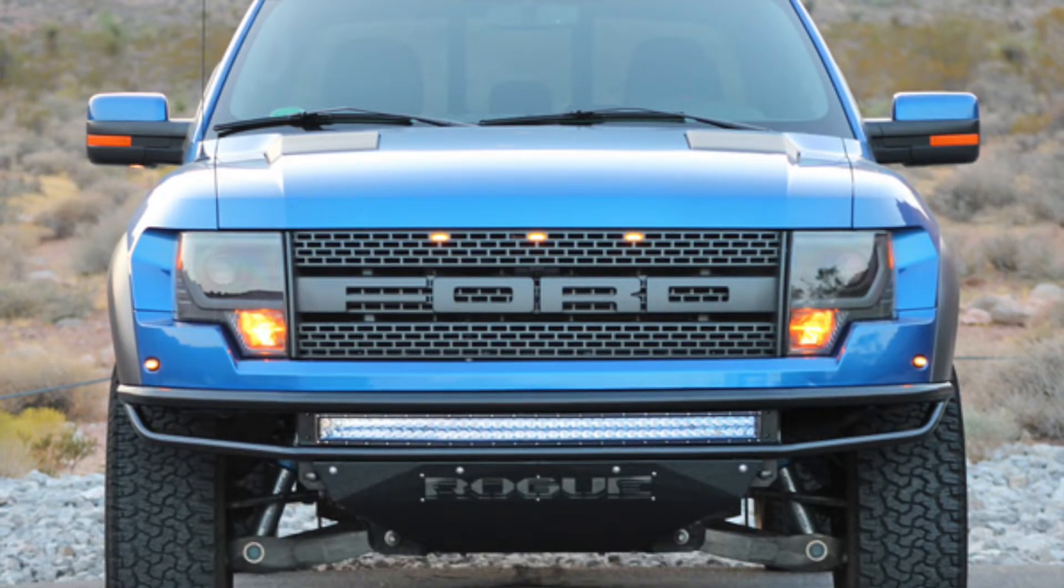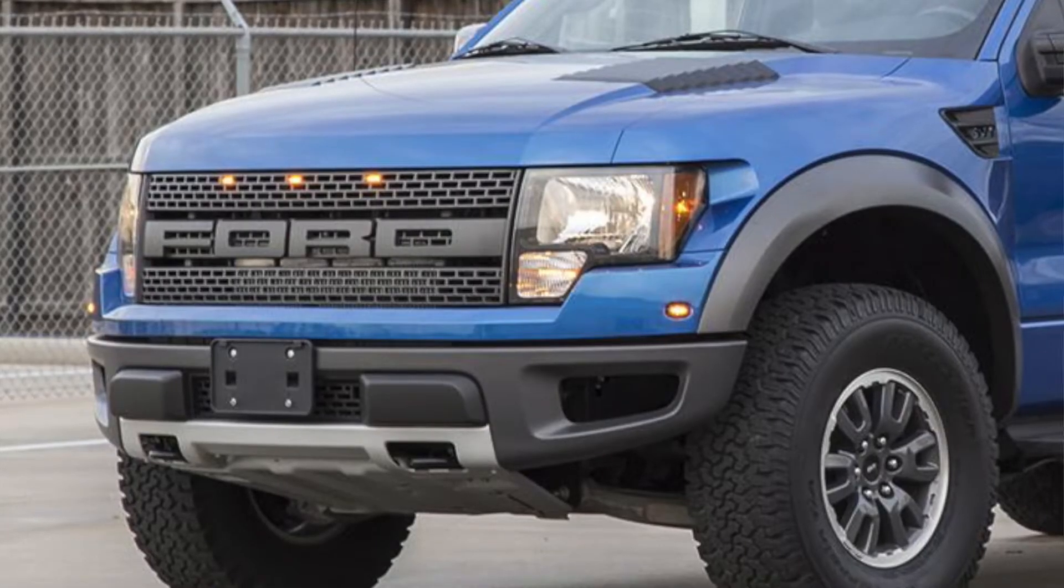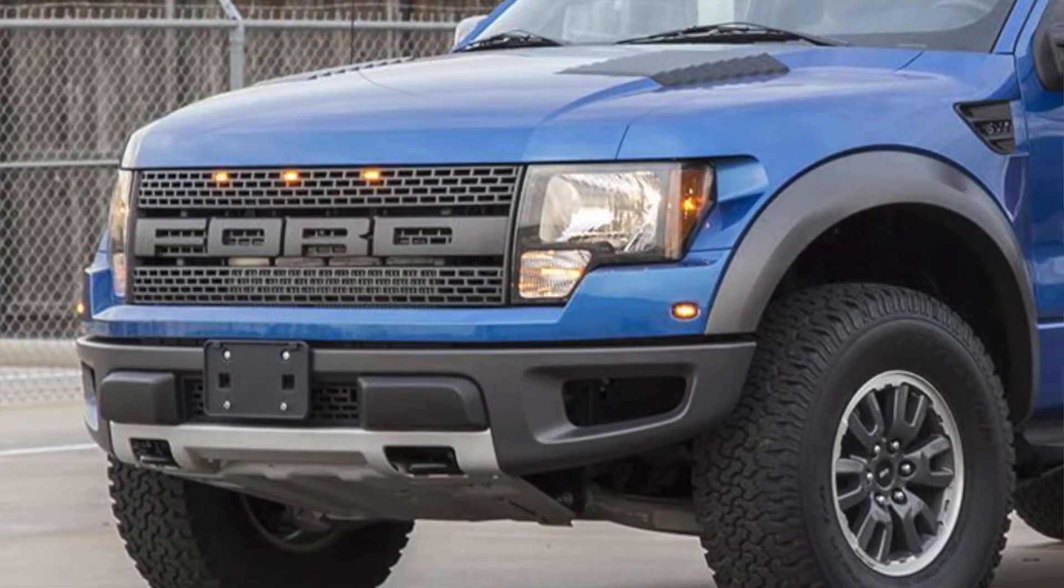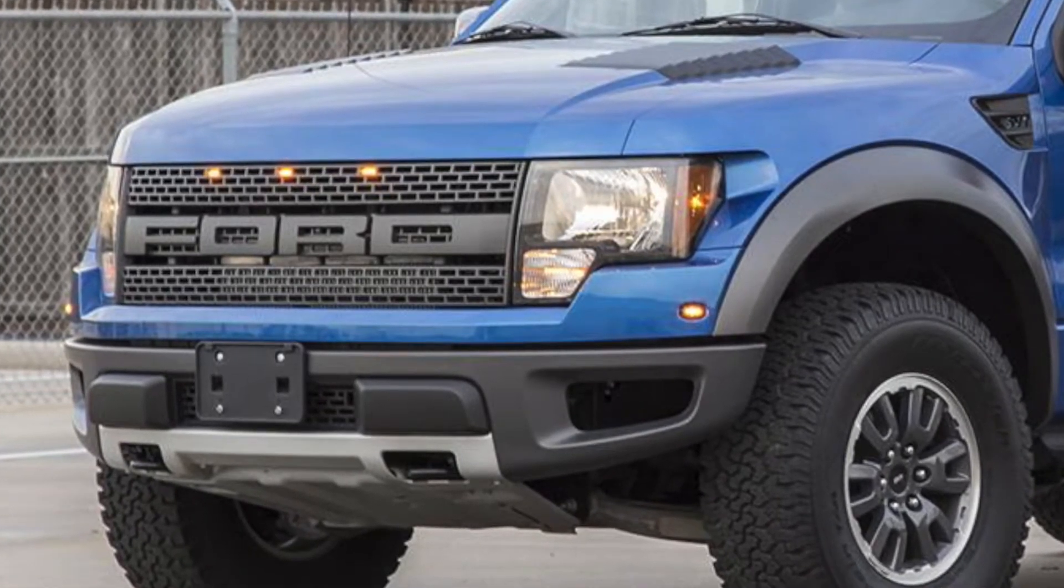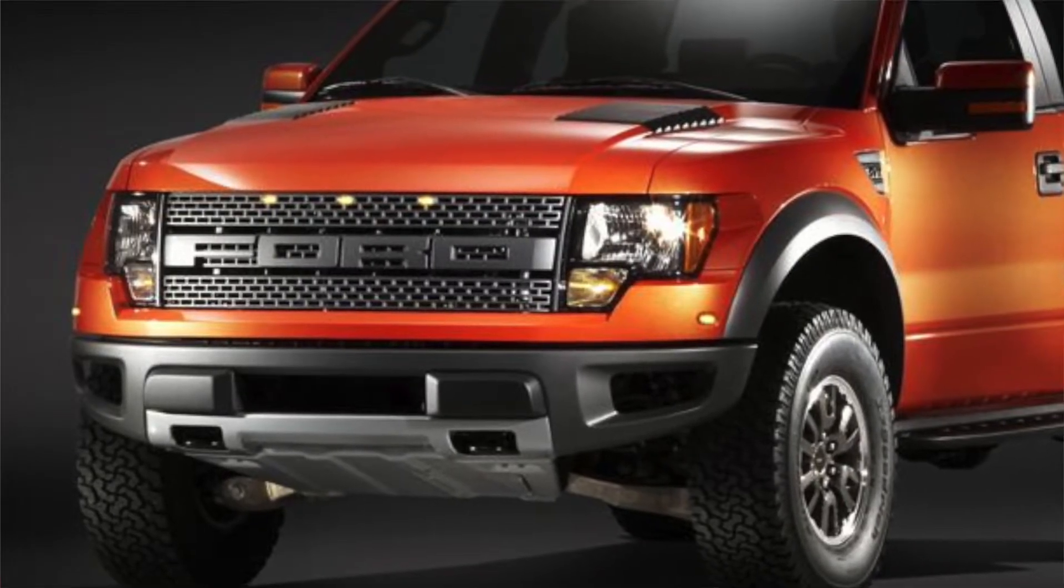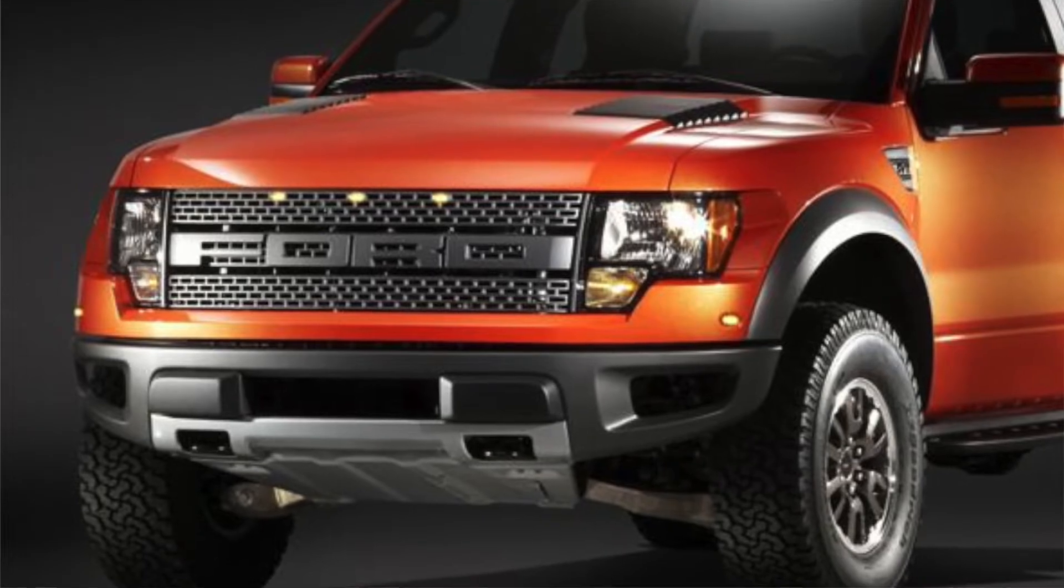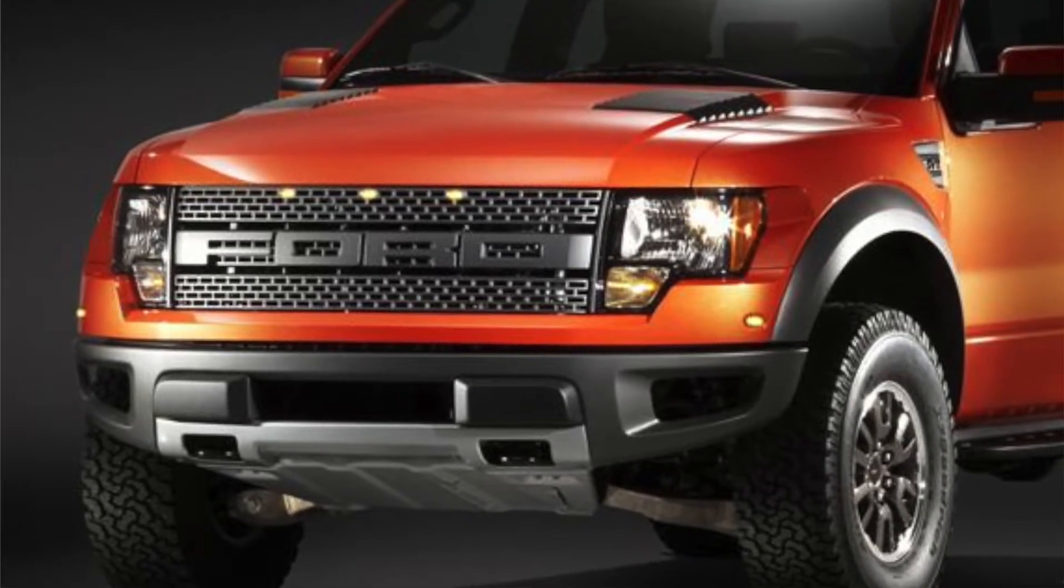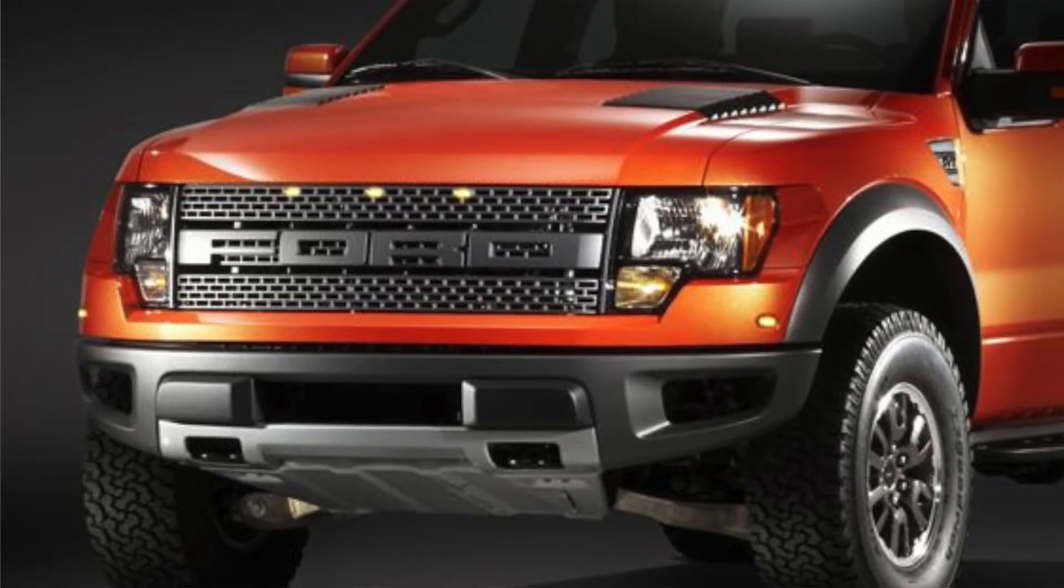The Raptor also fitted with grille-mounted clearance lamps. That was a requirement due to its size. And to distinguish the Raptor from the regular F-150, Ford Blue oval emblem was replaced by Ford letters on the grille. The cargo bed was redesigned as well to fit the wider rear track and tires.